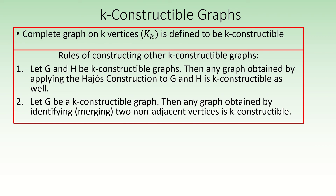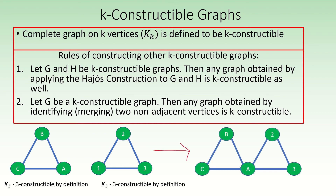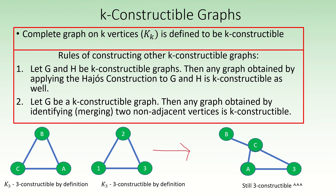These are the rules by which we find k-constructible graphs. For example, suppose we had two complete graphs on three vertices. By definition, they are three-constructible. Then, by applying the Hayosh construction, we get another three-constructible graph. And by merging non-adjacent vertices c and 2, we find yet another three-constructible graph.